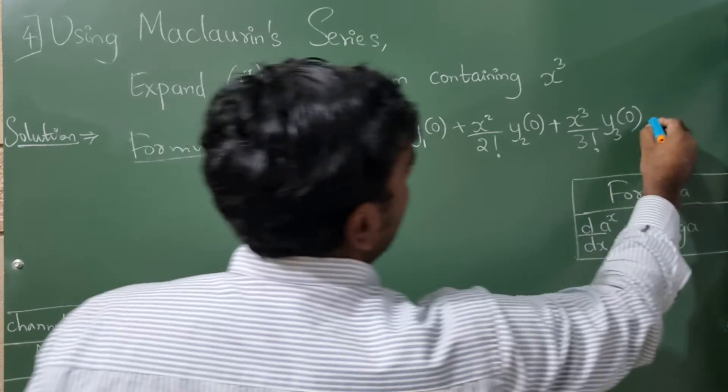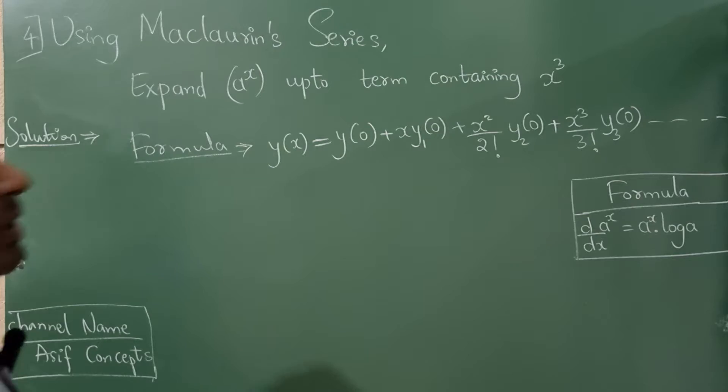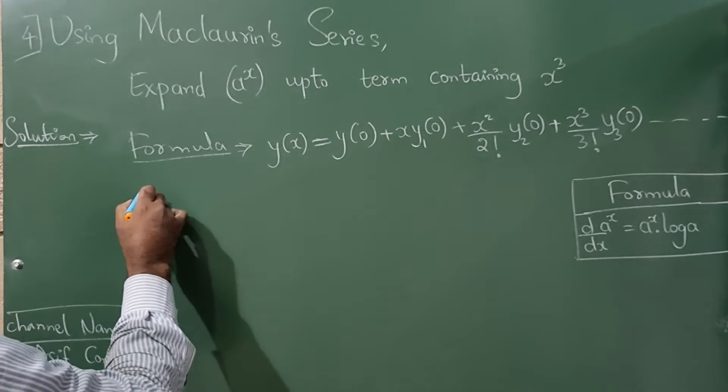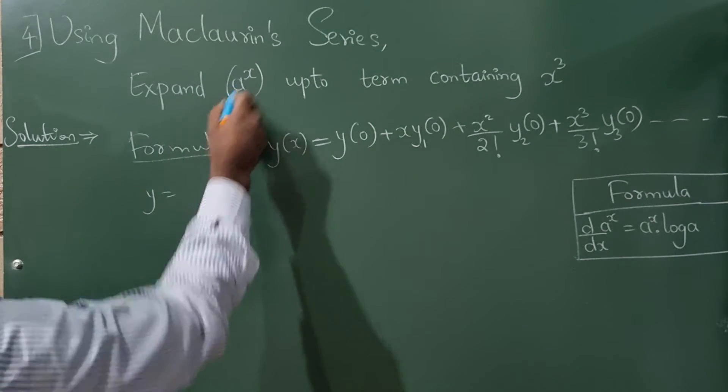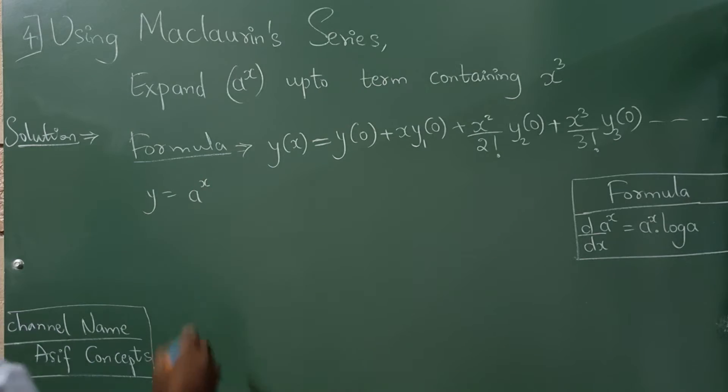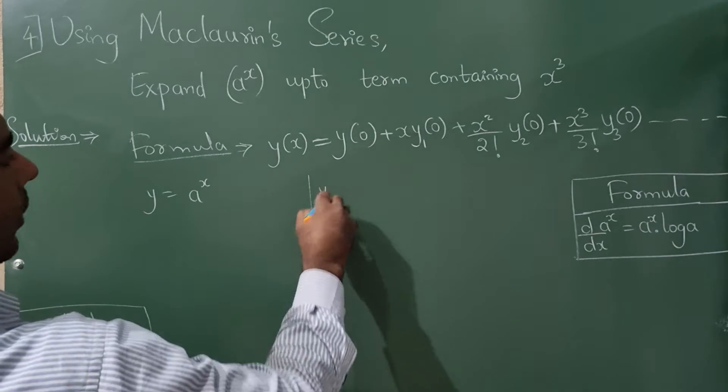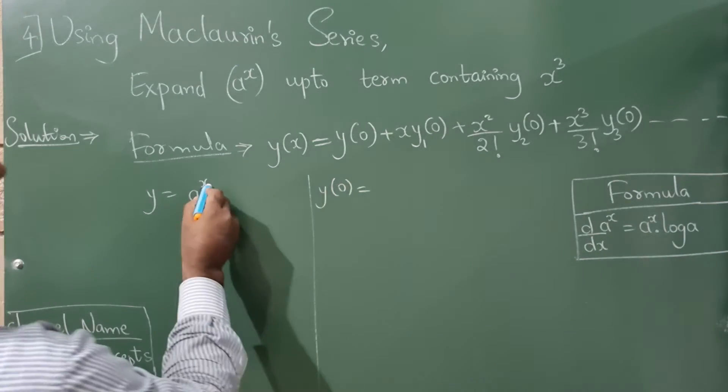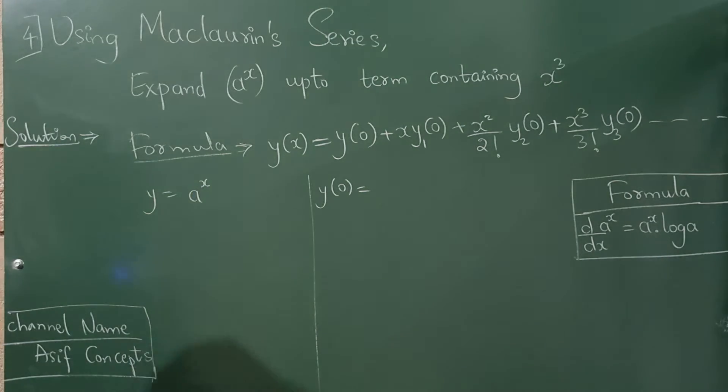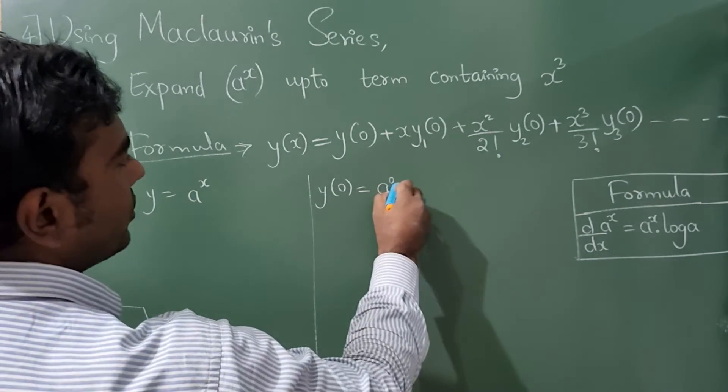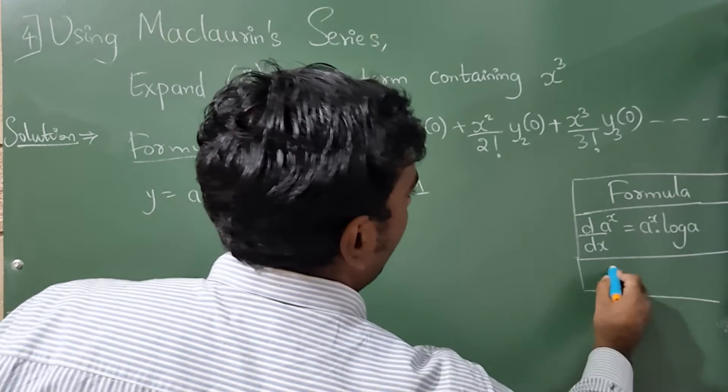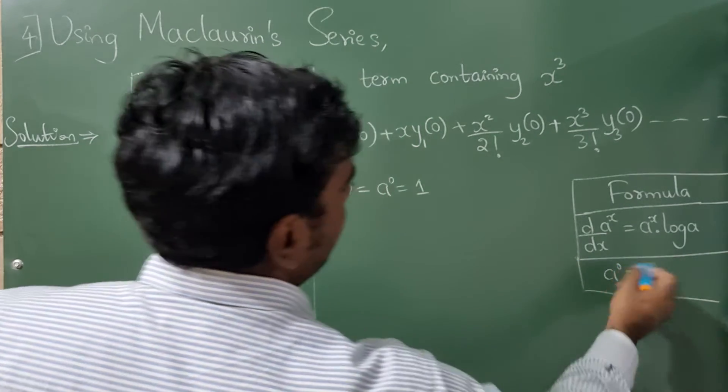Now I'll write y is equal to a raised to x. Now y(a₀), where there is x substitute 0, so a raised to 0 is 1. This is from formula: anything raised to 0 is 1.